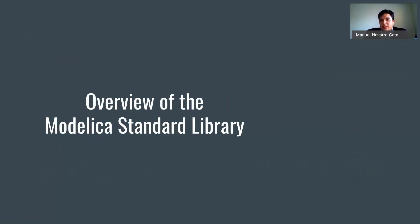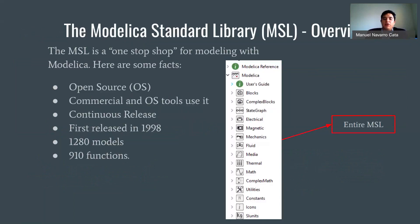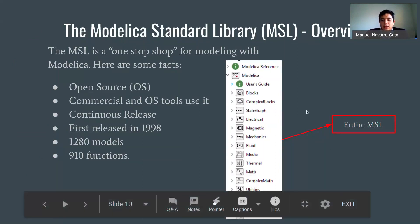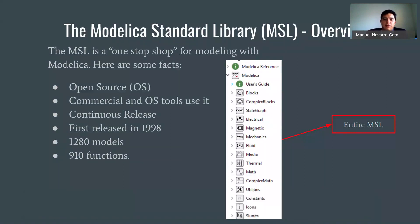A big thing within Modelica is that every single package comes with the Modelica Standard Library. Think of it like a one-stop shop for modeling with Modelica. It's open source, both commercial and open-source tools use it. It has continuous releases — it was first released in 1998 — and it has around 1,200 models and 910 functions. As soon as you fire up a Modelica IDE or a tool, you'll definitely see the Modelica Standard Library, and you can start doing any kind of modeling with it.